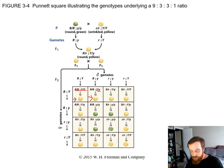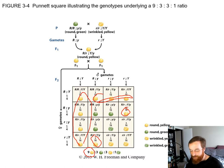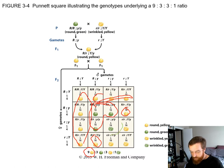We count up all the phenotypes. If we count the round yellow pea plants in this Punnett square, we have nine of them. Looking at the round green phenotypes, we have three in the middle portion. For the yellow wrinkled, we have three in the bottom corner. And lastly, for the wrinkled green — the one in the nine to three to three to one — we have just a single individual.